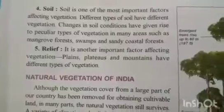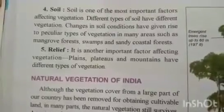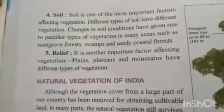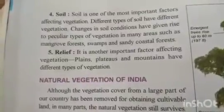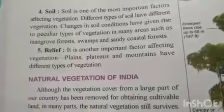Soil also plays an important role in determining the vegetation of an area. Different types of soil have different vegetation. Changes in soil conditions have given rise to peculiar types of vegetation in many areas, such as mangrove forests, swampy, and sandy coastal forests. Relief — meaning plains, plateaus, hills, mountains, and coastal areas — is also an important factor, as different relief types have different types of vegetation.